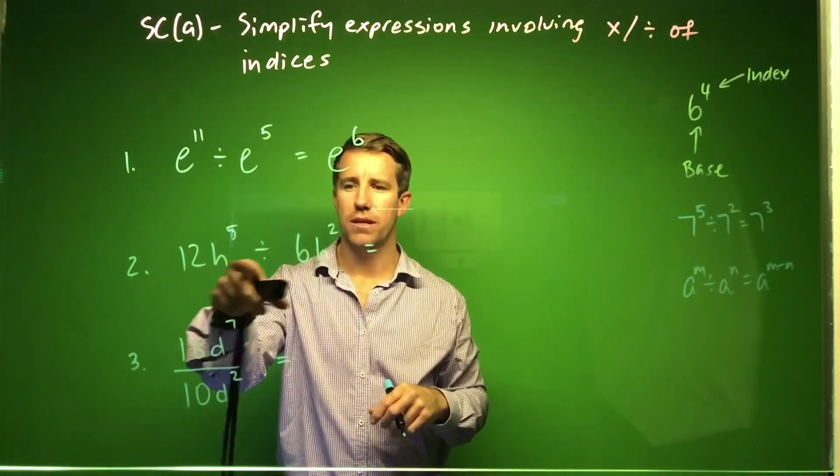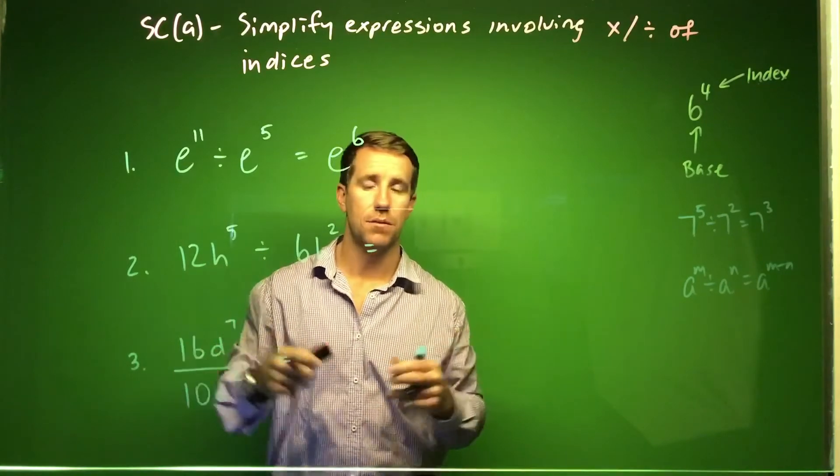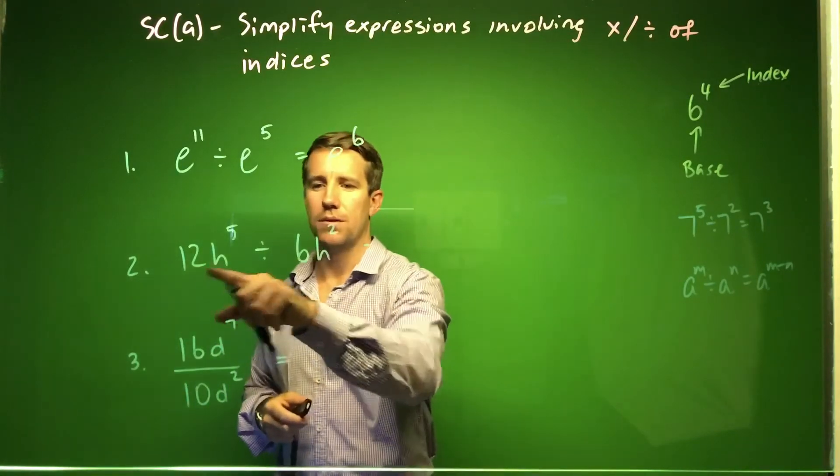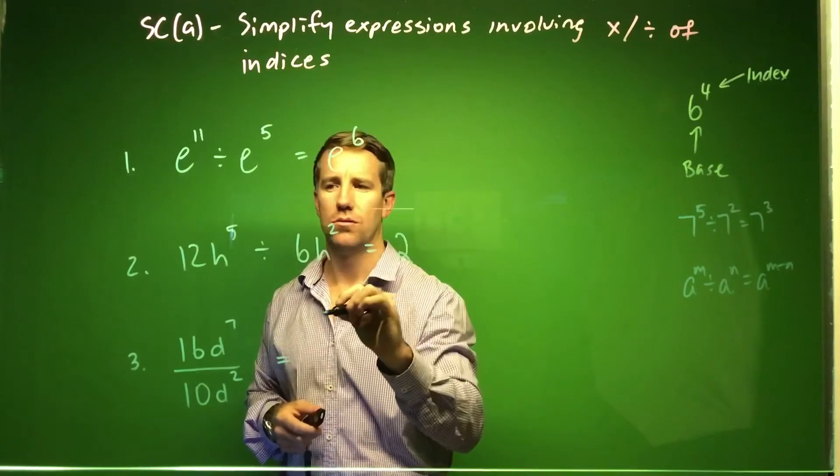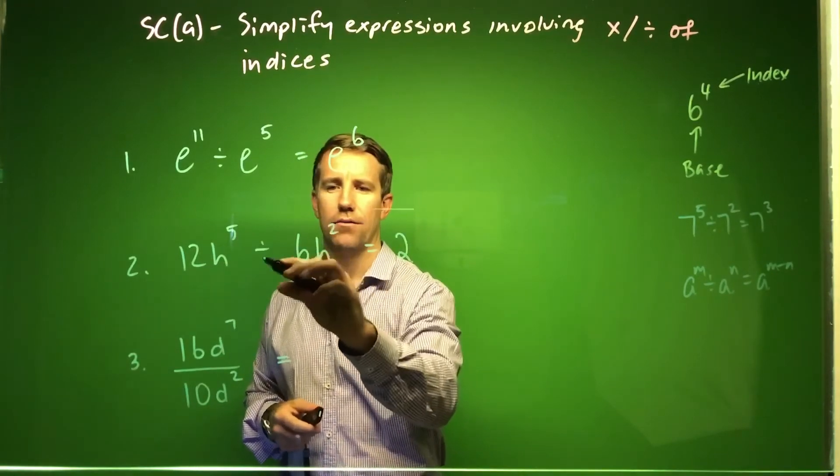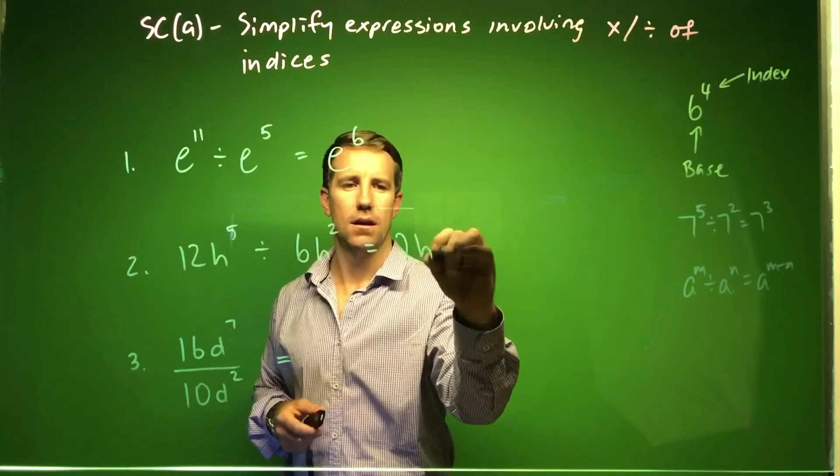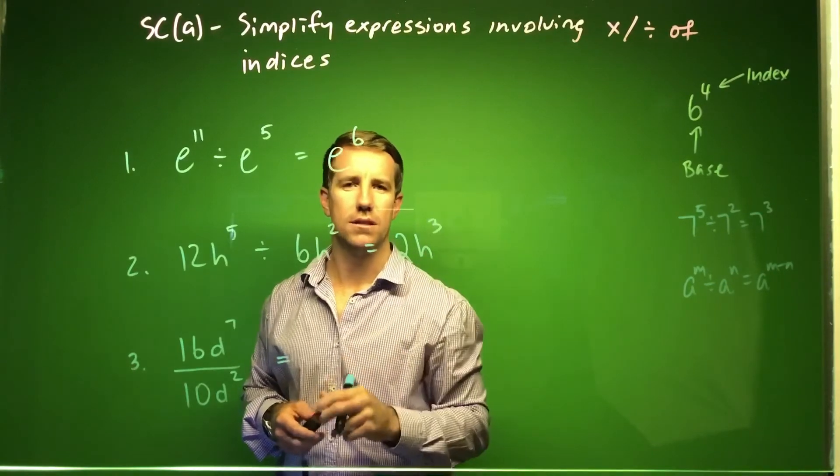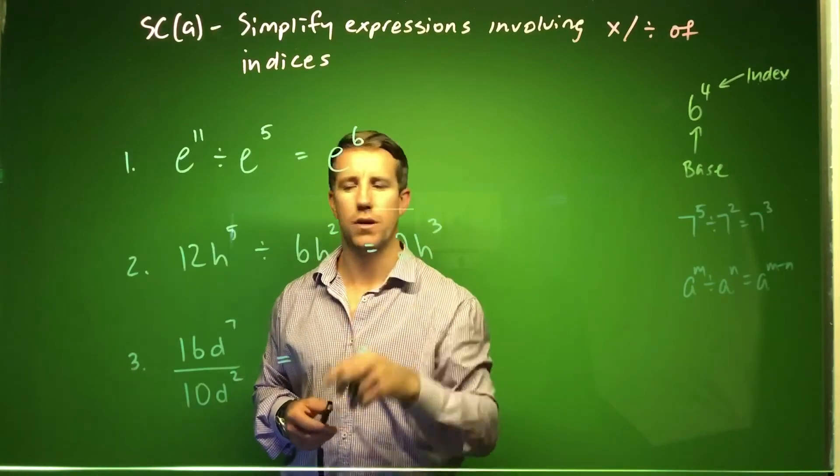Second one down, again we treat our coefficients out the front the same as we would any other time. So to begin with, 12 divided by 6 would give us 2, and h to the power 5 divided by h squared, same base, so we're just going to subtract those indexes from each other. You get h cubed, so 2h cubed for that one.